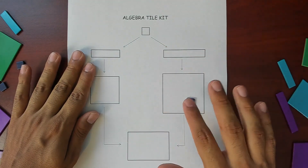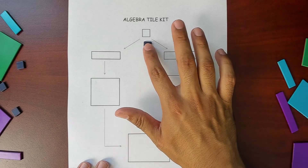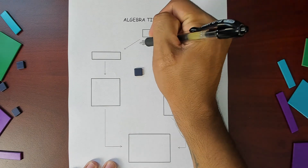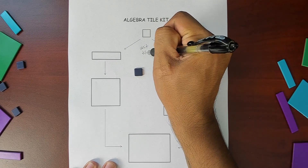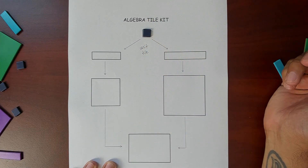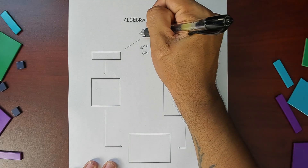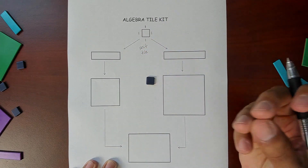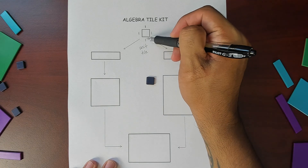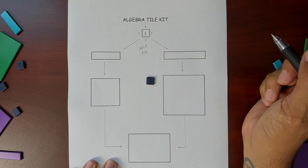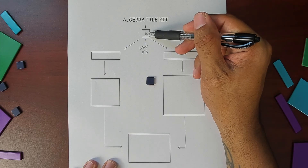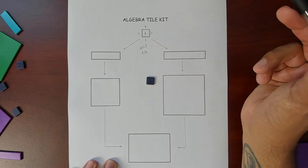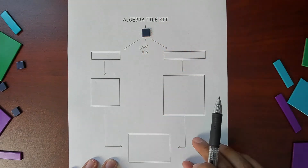We're going to start with our first algebra tile — this one right here. This is what we call our unit tile, or our one tile. We call it the unit tile because the side lengths are all one, so we measure every side as a length of one. The area of any rectangle or square is base times height, so one times one gives us one. That is our unit tile.